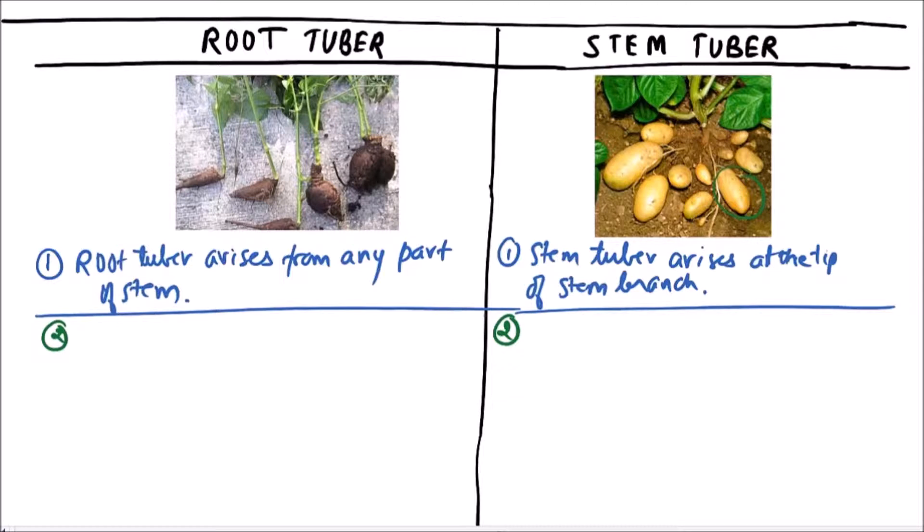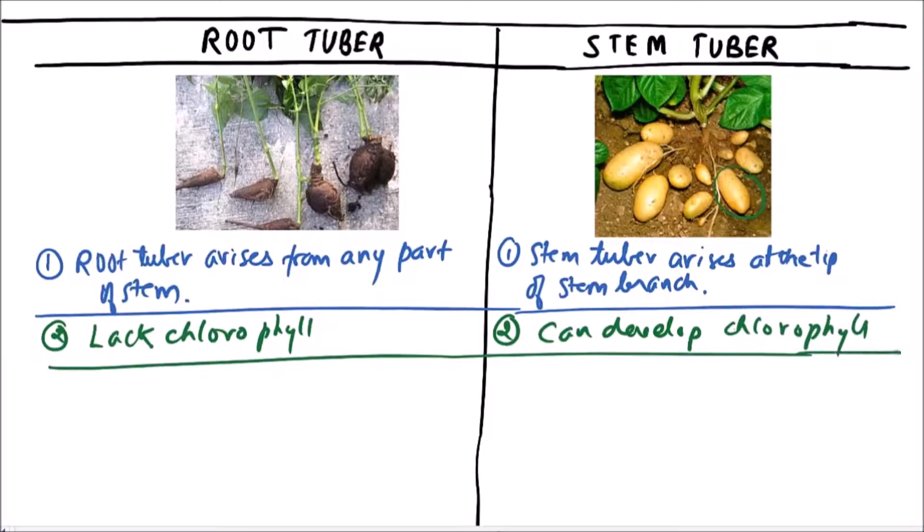The root tubers are non-green in color, i.e., they lack chlorophyll, while the stem tubers can develop chlorophyll, i.e., chlorophyll may or may not be present.